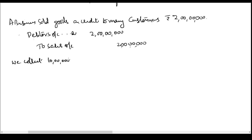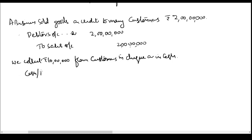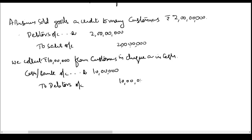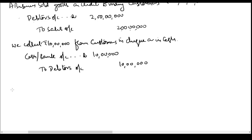Let's say we collect 10 lakh rupees from customers — some customers have made payment by check or in cash. The entry we record is: Cash or Bank Account debit 10 lakhs, to Debtors Account. If it is cash we debit cash; if it is a check we debit bank. This is the entry we pass when we collect money from customers.